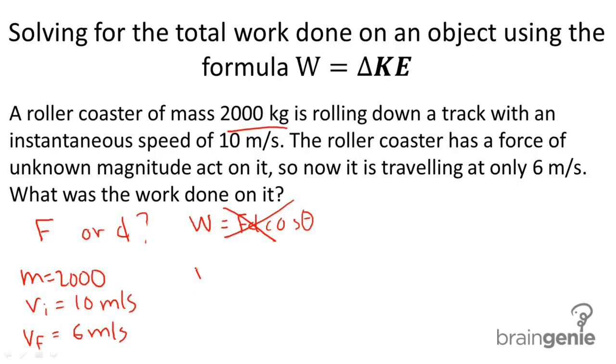When we plug this all into our equation, we get W equals 1 half, the final speed, so I'm going to put this in parentheses, 2,000 times 6 squared minus 1 half, 2,000 times 10 squared. And we get a final answer of 60,000 joules of work.